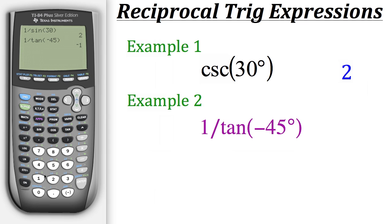When we do that, we get a result of negative 1, which also means that the cotangent of negative 45 degrees equals negative 1 as well.